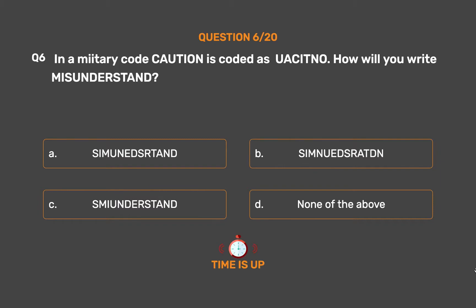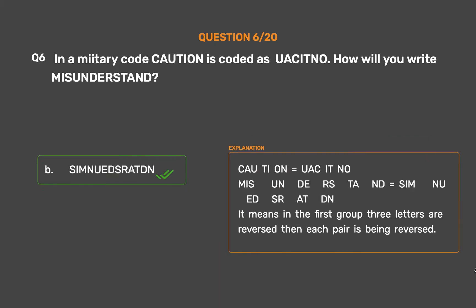The correct answer is Option B: SIMUNEDSURATADU. CAUTION → UACIT NOMIS. It means the first group of three letters is reversed, then each pair is being reversed. Applying this to MISUNDERSTAND gives SIMUNEDSURATADU.